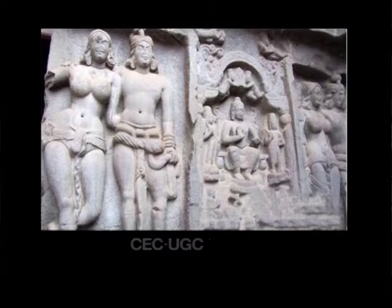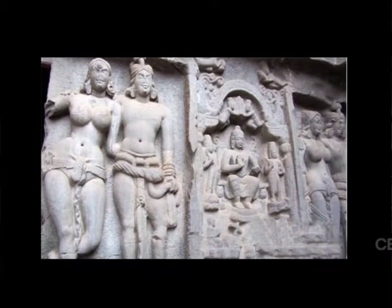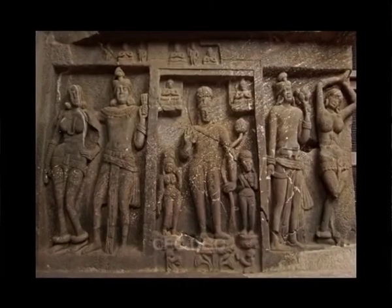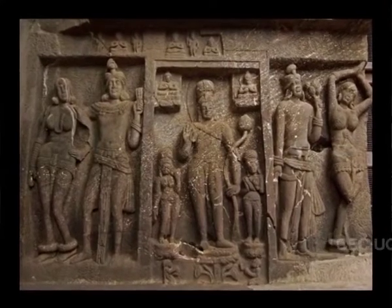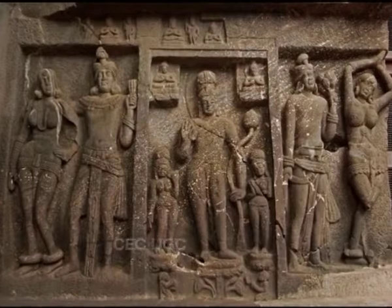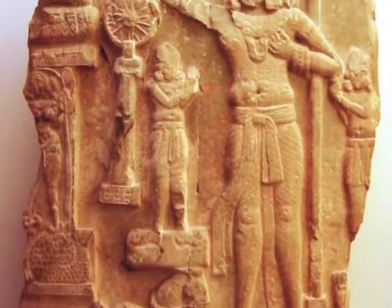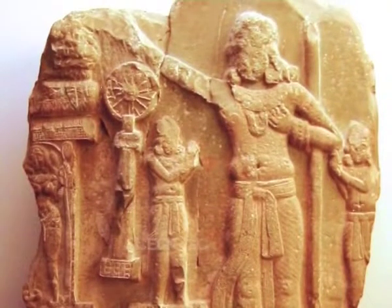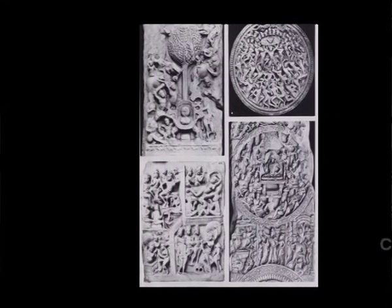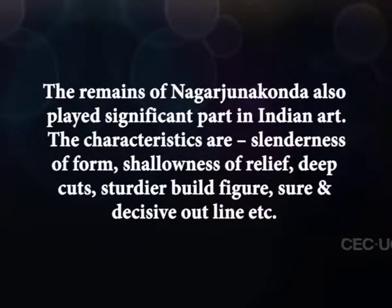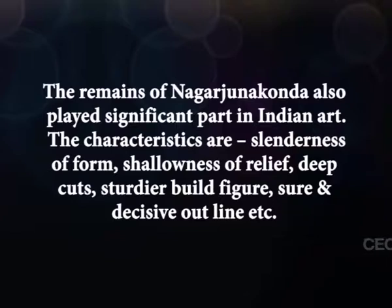Karli and Kanheri in West India have been described as the aboriginal trend in rock carvings. The heavy plastic form, broad and expansive in content, and awareness of disciplined rhythm, seems to be inspired by the classical concept. In South India, the school of Vengi appeared in the 2nd century BC. Amravati marks the center of this southern movement. The remains of Nagarjunakonda also played a significant part in Indian art. The characteristics are slenderness of form, shallowness of relief, deep cuts, sturdier built figures, and sure and decisive outlines, marking the end of the old school.